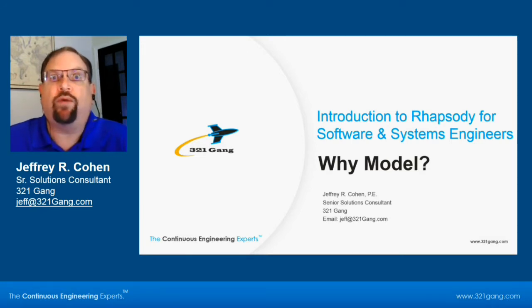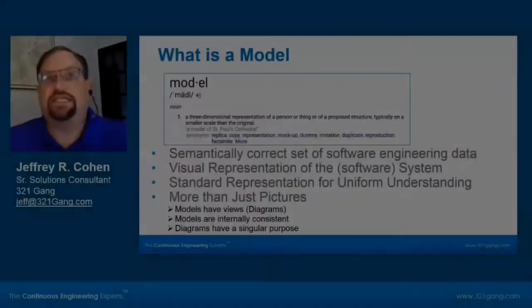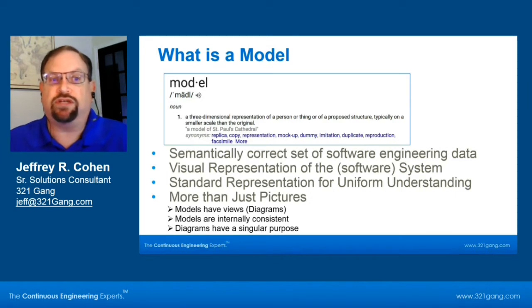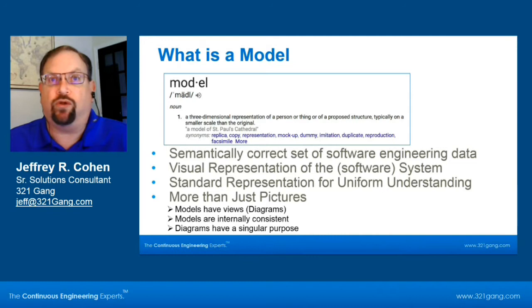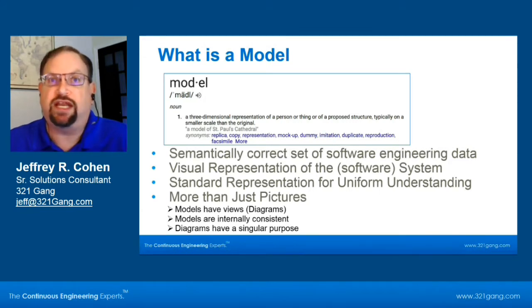Today we're going to talk about why we model and what a model is. Starting with a dictionary definition — most of us know what a model is. It's a representation of something. In the systems engineering and software world, it's a semantically correct set of data that represents something else we're going to be building. In SysML and UML, we move from a text-based world into a graphical, visual world. We show the representation with diagrams and drawings, but it's really important to realize that the model is not just the diagrams — it's everything associated with it, all of the data that goes around it.